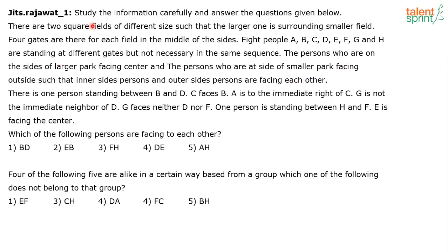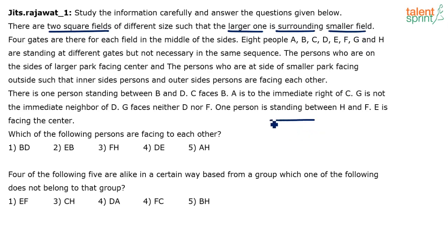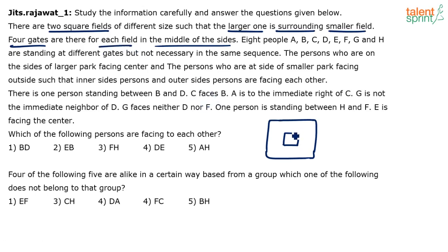We need to understand the description clearly before moving on. There are two square fields of different size and the larger one is surrounding the smaller one. If I draw here, this is the larger field surrounding the smaller one — there is a smaller field inside. Four gates are there for each field in the middle of the sides.